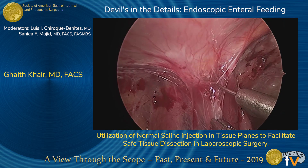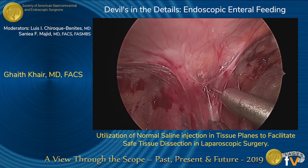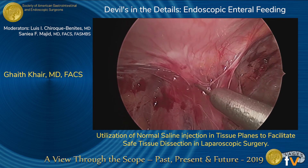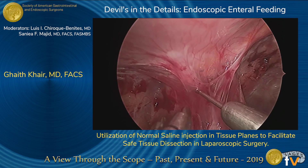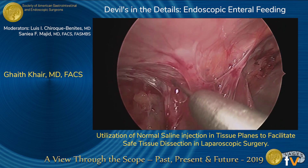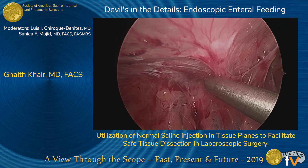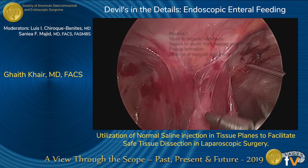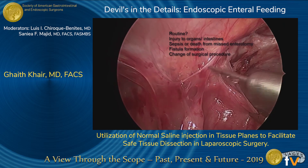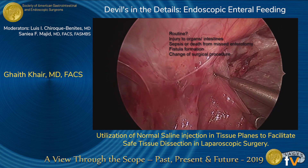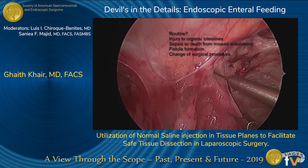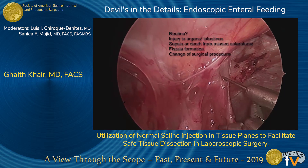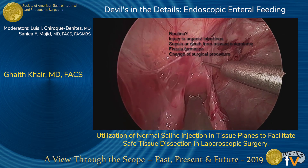In this clip, we will see the versatility of injecting the saline. This is a complex adhesion where the planes are not easily separated. We inject saline right next to the abdominal wall. If the lysis of adhesion is not carefully done, it can lead to injury to the intestine, adjacent organs, sepsis or death, or fistula formation.